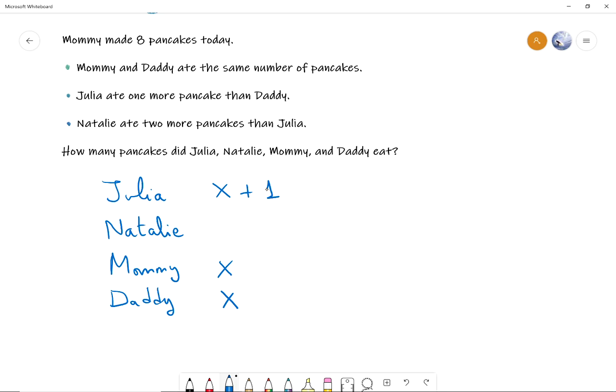And how about Natalie? Natalie ate two more than Julia. So she ate as many as Julia, so I'm going to write X plus one and two more plus two. Okay. So in total these have to add up to eight pancakes. Okay. All right. So what this tells us is that if I add all these numbers together I should get eight. So let's try that out. I'm going to write X plus X plus what Julia ate, X plus one, plus what Natalie ate, X plus one plus two. And that should be eight pancakes.